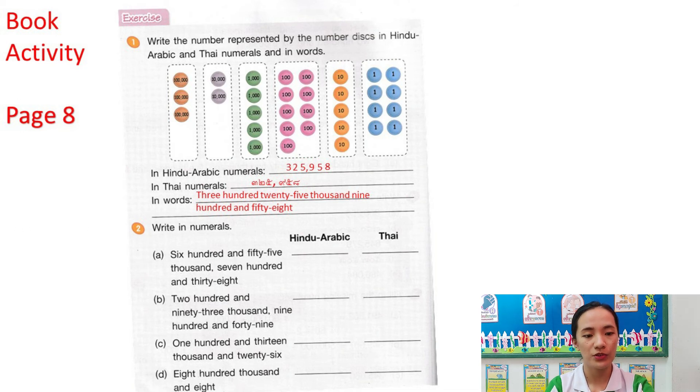For number 2, write in numerals. For example, letter A: six hundred and fifty-five thousand seven hundred and thirty-eight. So, you need to write this in Hindu-Arabic and in Thai.